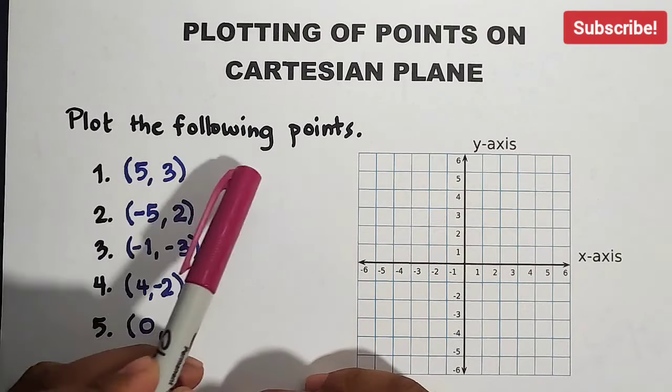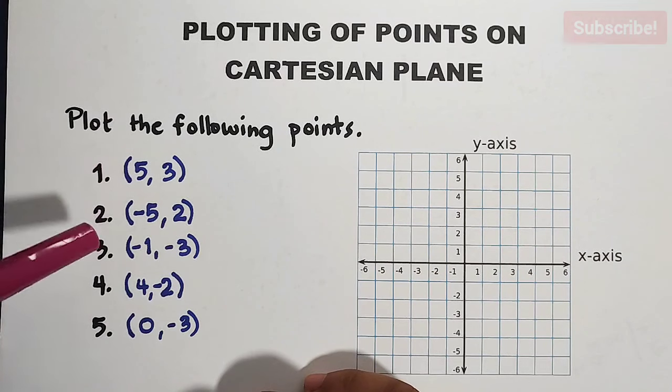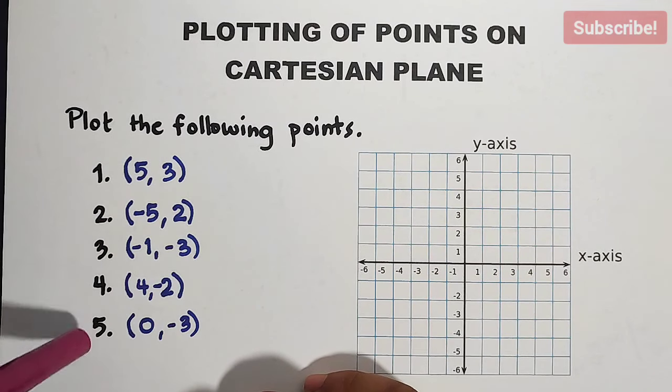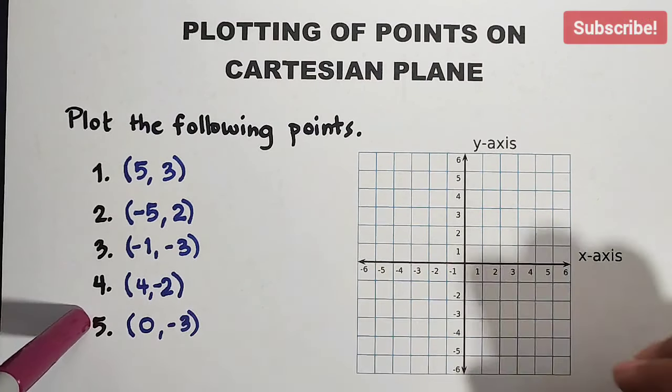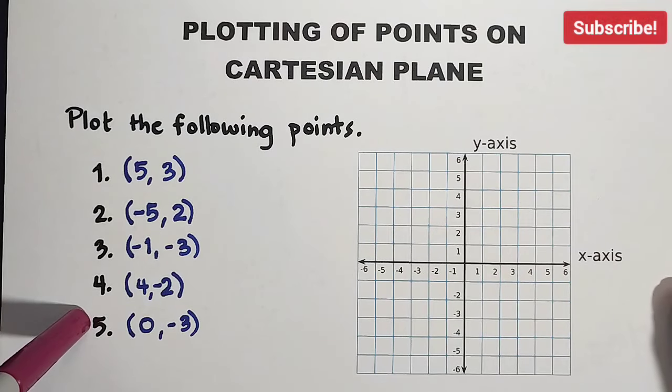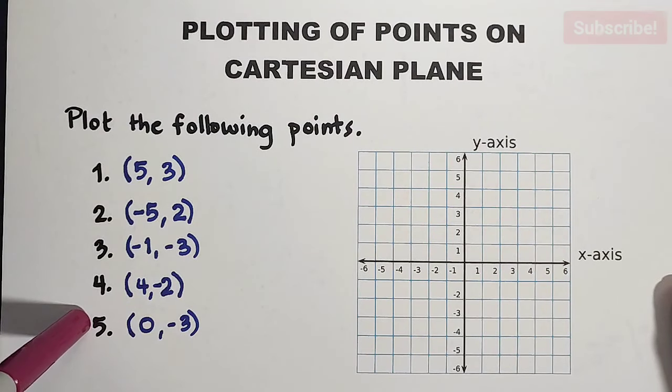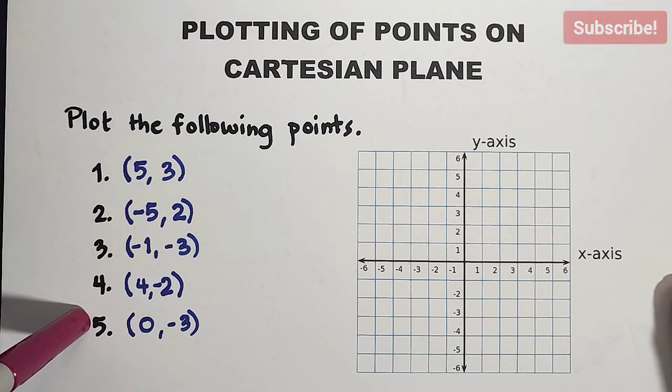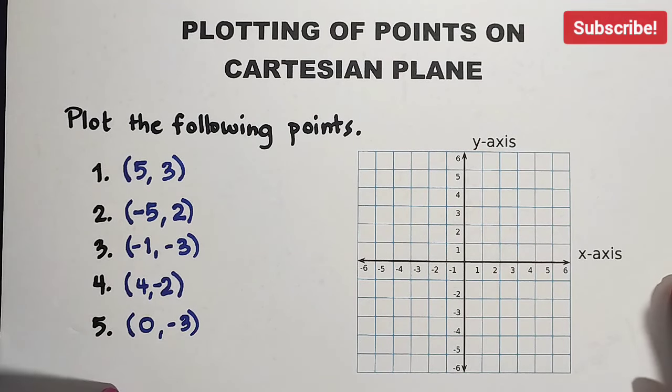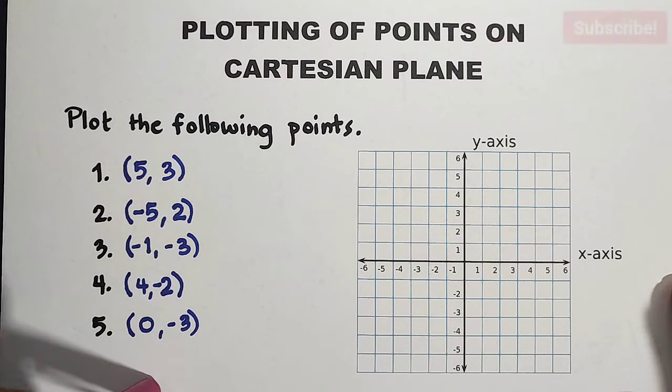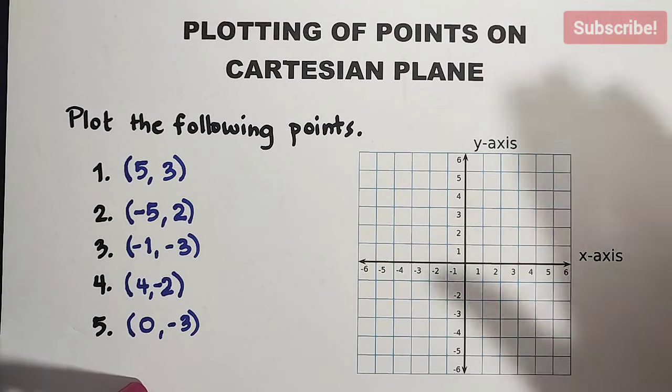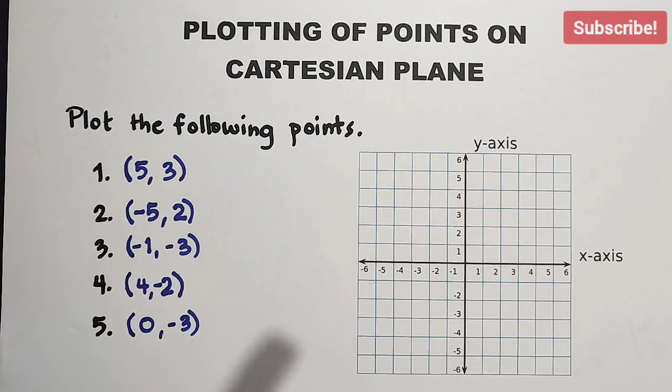We are asked here to plot the following points. We have here five different given points or ordered pairs that we need to place on our Cartesian plane. Now I mentioned that we have a video about identifying the quadrant because it will help you to easily identify where on the Cartesian plane your points are located.